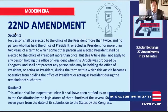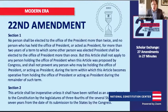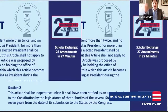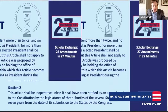The 22nd Amendment goes back to George Washington, who set the precedent of not running for a third term — a precedent everyone followed until FDR, who was elected four times. After FDR, the people said we don't want that to happen again and wrote the two-term limit into the Constitution with the 22nd Amendment, returning to the George Washington precedent.